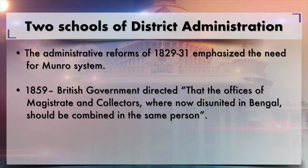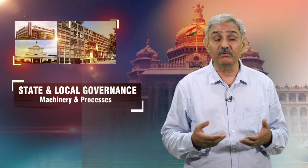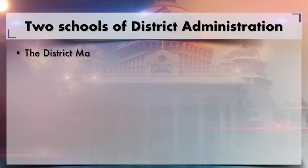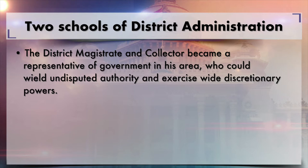In 1859, the British government directed that the offices of magistrate and collector, which had been disunited as in Bengal, should be combined in the same person — as under the Munro school — where magisterial, executive, and revenue collection powers were all vested in the office of the collector. The district magistrate and collector thus became a representative of government in his area, able to exercise wide discretionary powers.